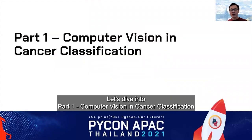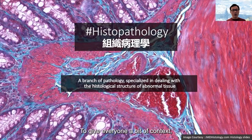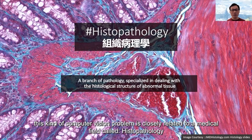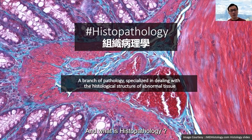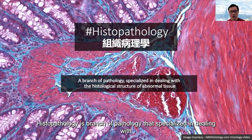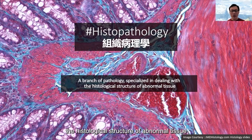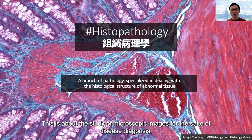Let's dive into part one: computer vision in cancer classification. This kind of computer vision problem is closely related to a medical field called histopathology. Histopathology is a branch of pathology specialized in dealing with histological structure in abnormal tissues. In very layman's terms, this is about the study of microscopic images for the sake of disease diagnosis.